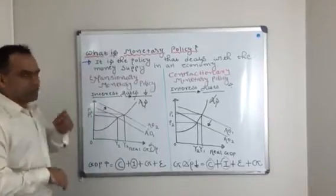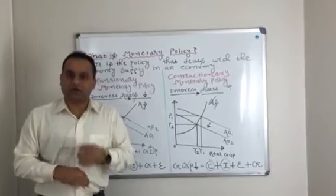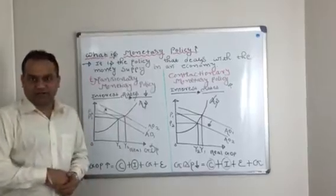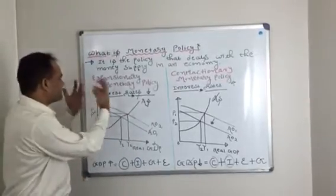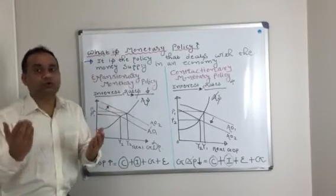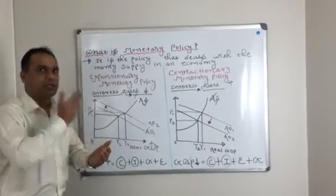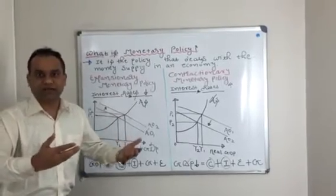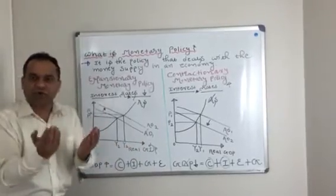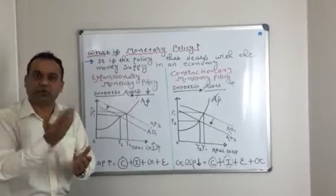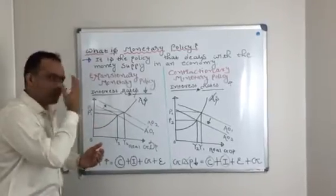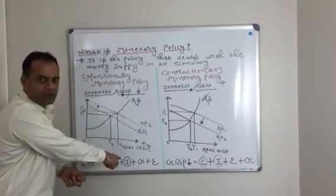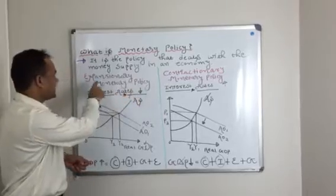In expansionary monetary policy, what the federal bank, central bank, or reserve bank of a nation does is lower the interest rate. They lower the interest rate because in expansionary monetary policy the economy is going through recession. The central bank wants consumers to increase their spending in the market, so they lower interest rates to encourage people to borrow more money, directing it toward consumer expenditure and increased investment.